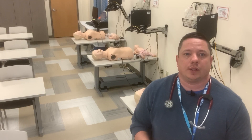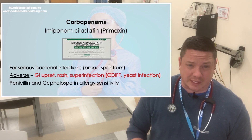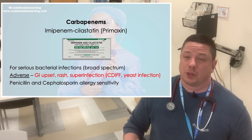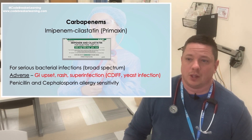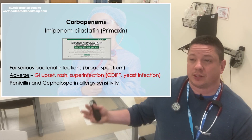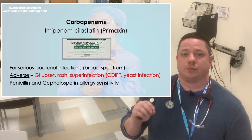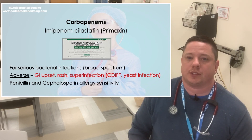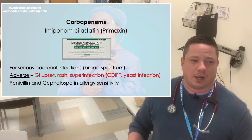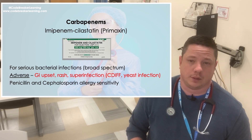The next medication is imipenem-cilastatin, also known as Primaxin. This is for serious bacterial infections and is a broad-spectrum antibiotic. It can cause GI upset, urticaria (rash), and superinfection leading to C. diff. Killing off good flora can also lead to yeast or fungal infections. You want to look for penicillin and cephalosporin allergy sensitivities with this medication, and it may cause an enhanced anticoagulation effect with warfarin (Coumadin).